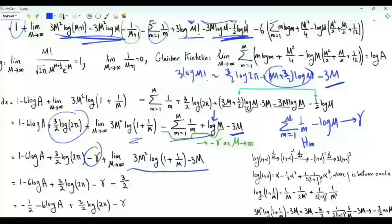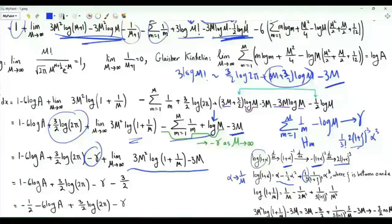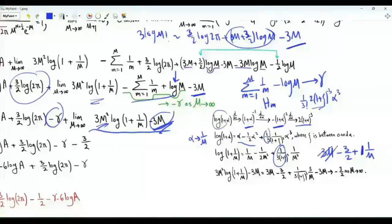Now for the last part: do the Taylor polynomial for log(1 + α) about 0. We get α − (1/2)α² + (1/6)(third derivative at ζ)·α³. Replacing α by 1/M and multiplying log(1+1/M) by 3M², then subtracting 3M: when we multiply out we get 3M − 3/2 plus a remainder bounded by (1/3)·(1/M), so this term goes to 0. This limit is −3/2. Then −3/2 + 1 = −1/2.